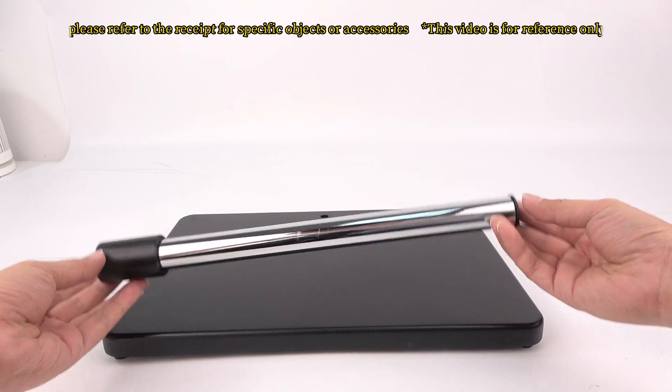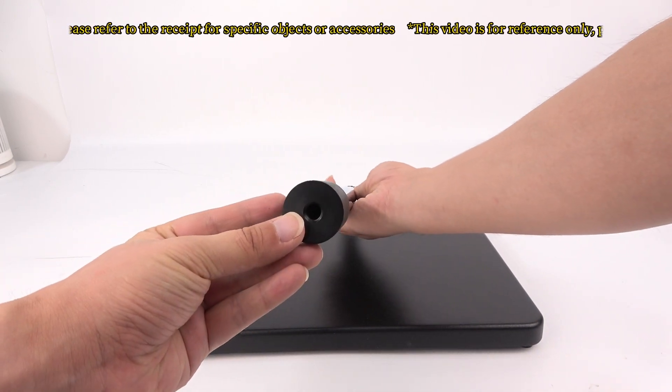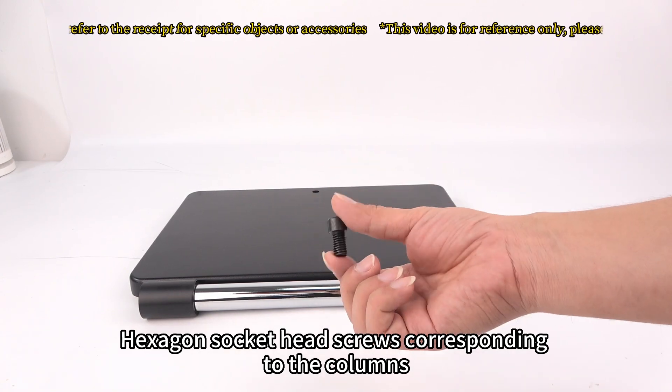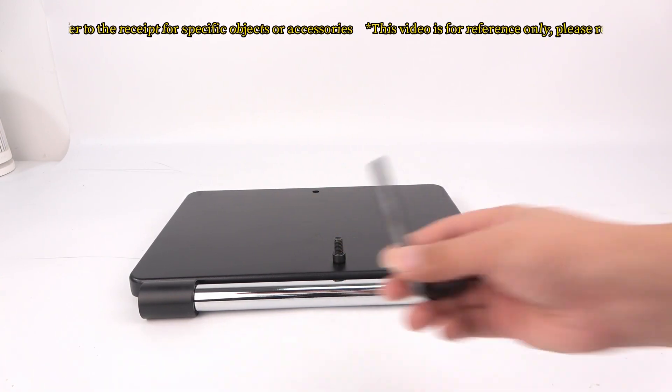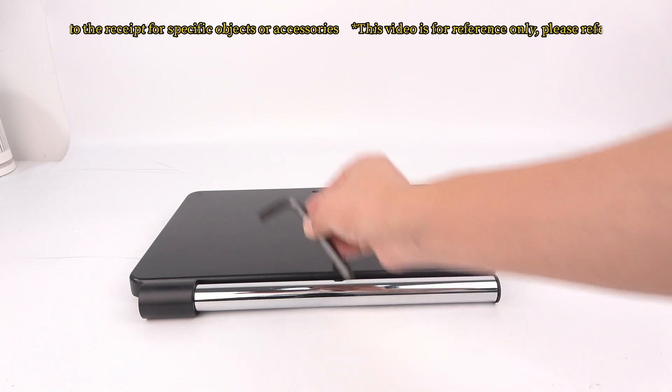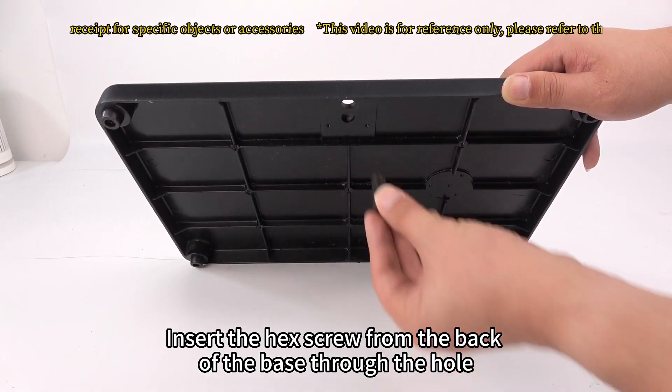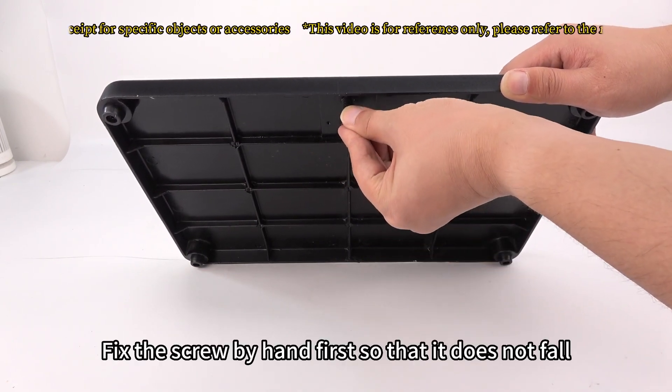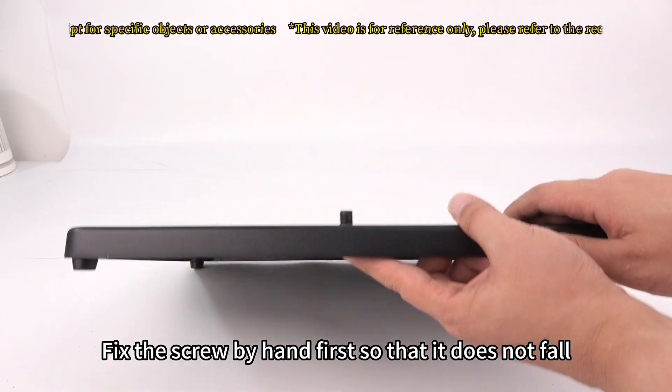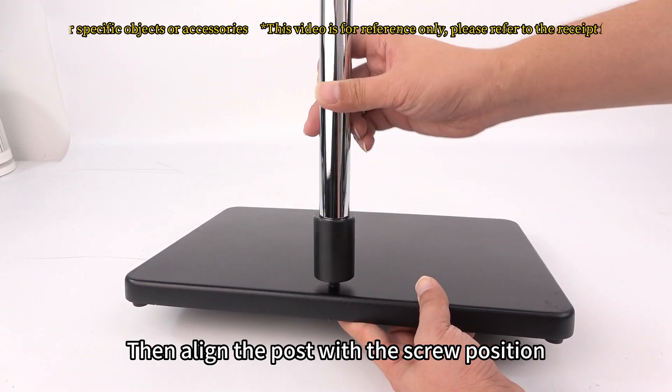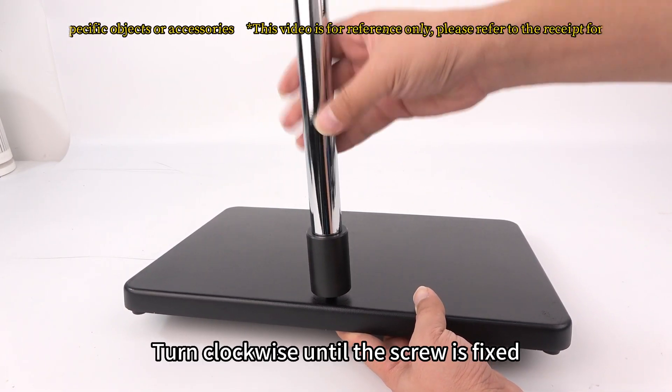Take out the column. Hexagon socket head screws corresponding to the columns. Allen wrench. Insert the hex screw from the back of the base through the hole. Fix the screw by hand first so that it does not fall. Then align the post with the screw position. Turn clockwise until the screw is fixed.